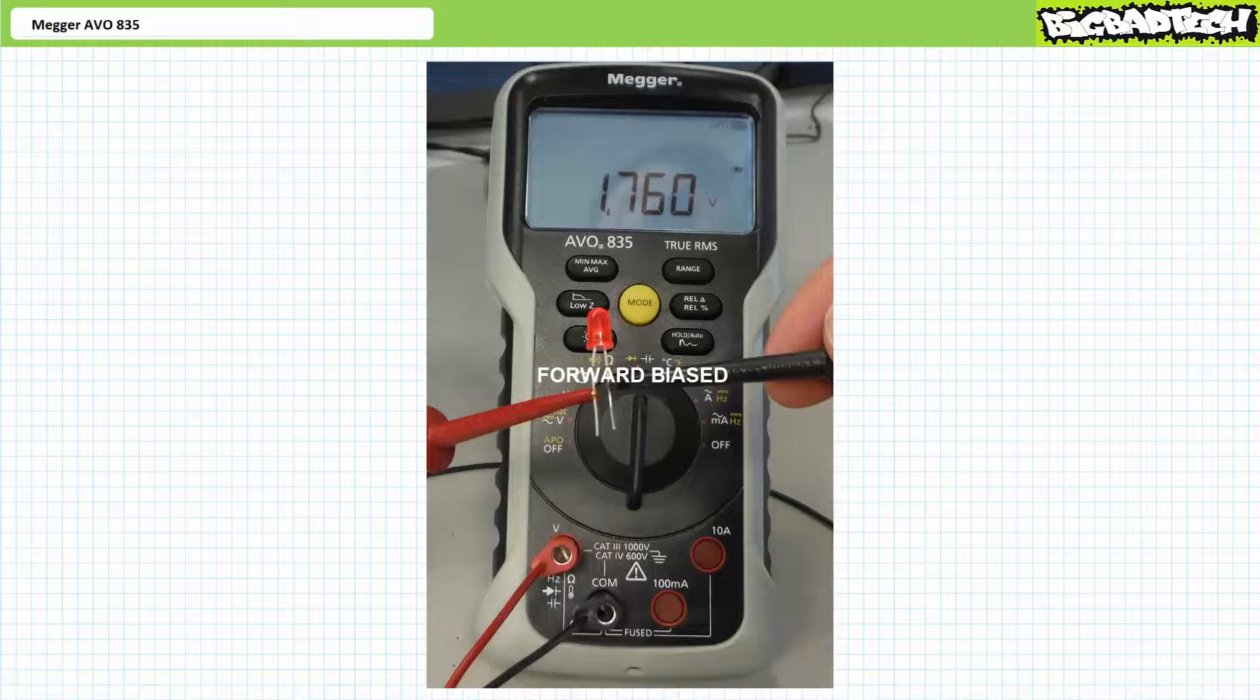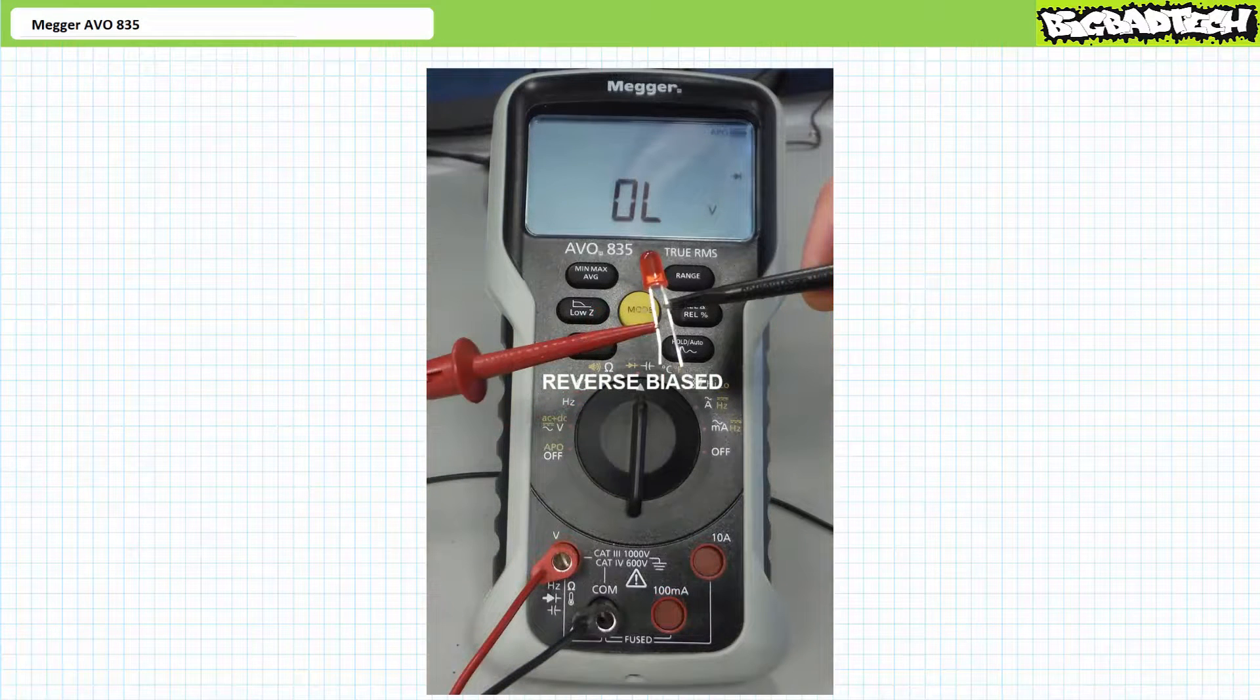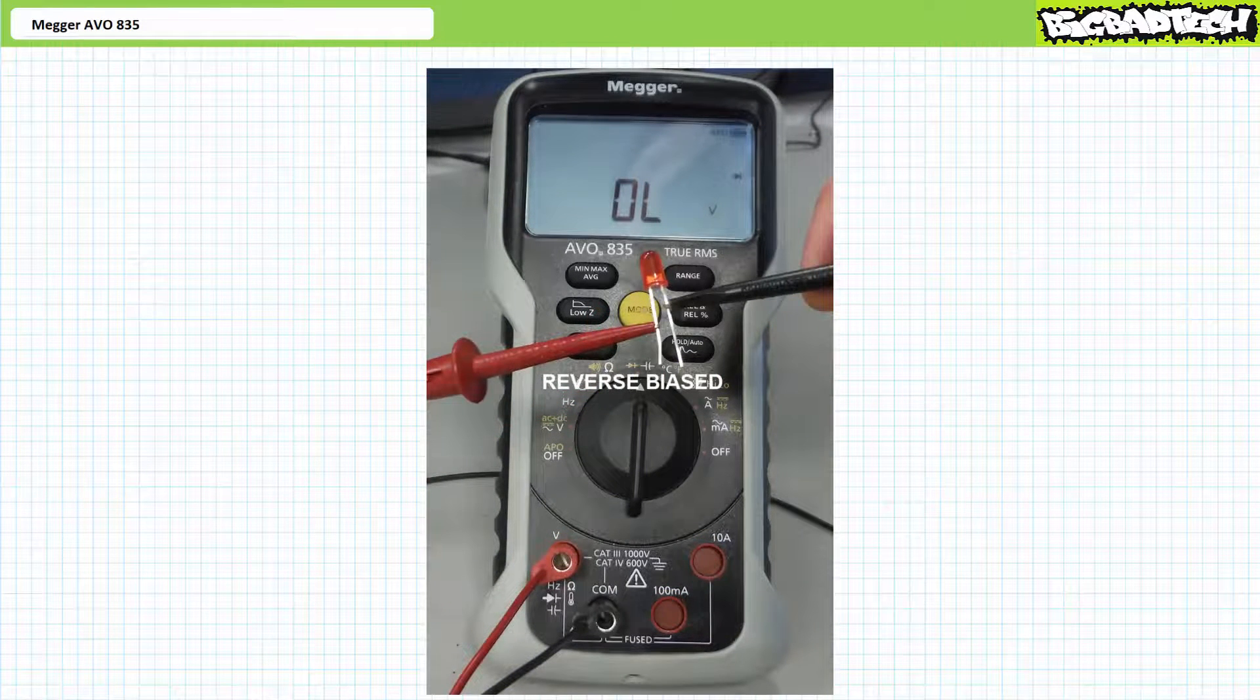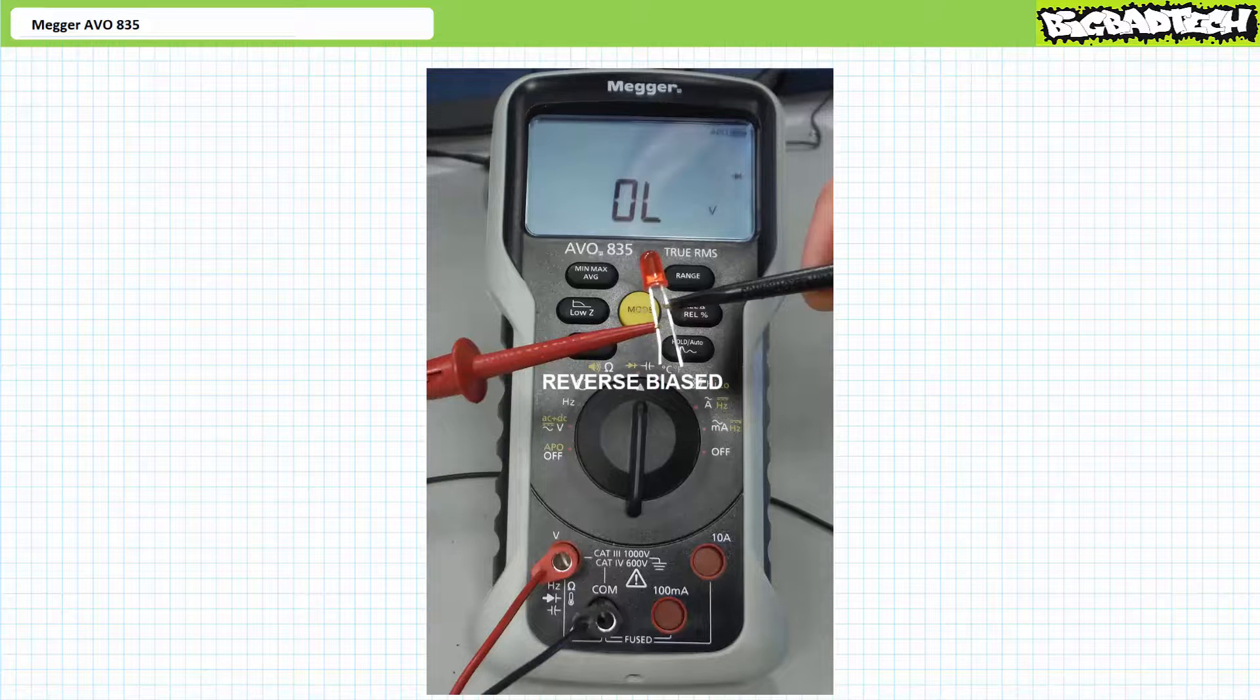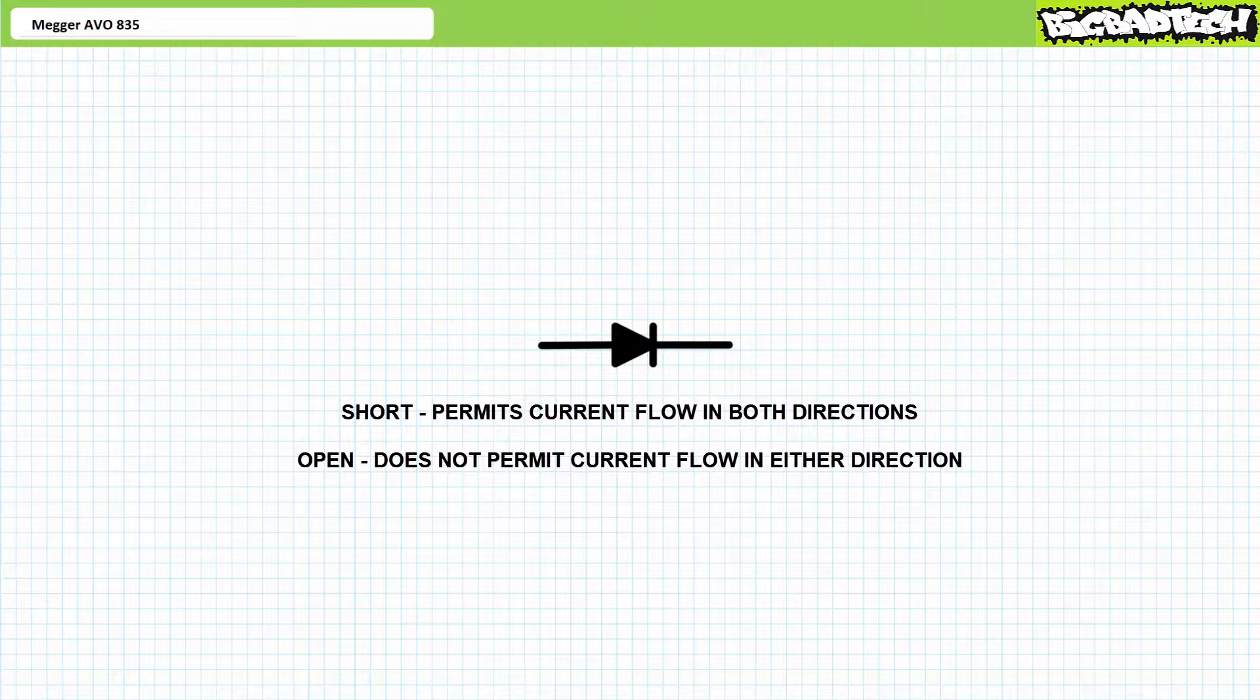If, however, we place the live red lead on the shorter negative terminal and the black common lead on the longer positive terminal, the LED does not illuminate and the AV0835 indicates voltage over limit. This LED is reverse biased and does not permit current flow as presently oriented. Diodes die one of two deaths, opens or shorts.